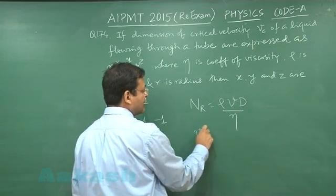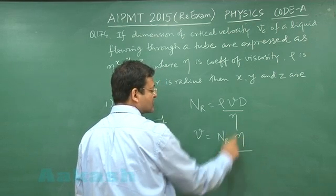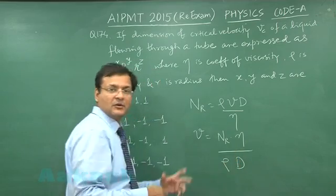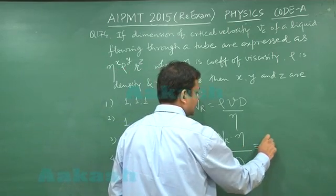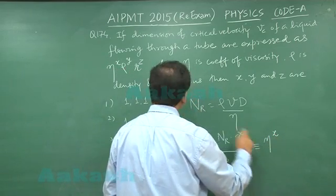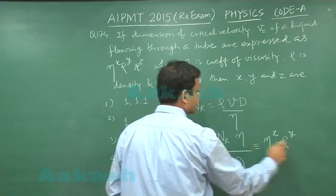And if you rearrange, then this velocity can be written as Reynolds number multiplied by coefficient of viscosity, this is density and diameter or radius whatever you say. And this is given as eta raise to the power x, this rho raise to the power y, and r raise to the power z.